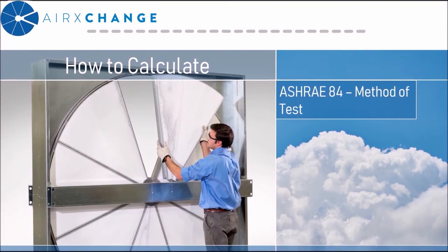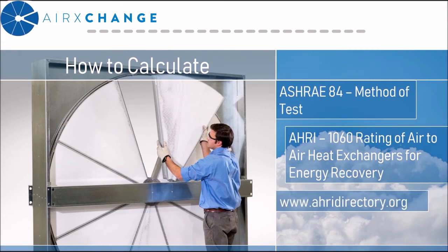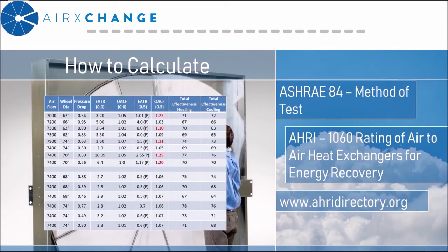ASHRAE Standard 84 provides the method of test, and the rating of energy recovery devices is determined by AHRI Standard 1060. The certified ratings include both EATR and OACF at three different pressure differentials. Anyone who participates in the certification program must rate at a neutral pressure of zero inches, with the other two points chosen by the manufacturer. These values are then published on the AHRI directory for public view. This demonstrates that EATR and OACF are equitable — this chart contains AHRI data from several different manufacturers with different media geometry and desiccants, and these characteristics exist for everyone, not specific to a certain manufacturer.